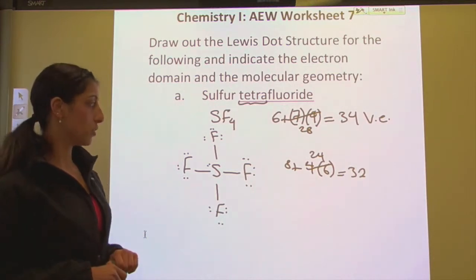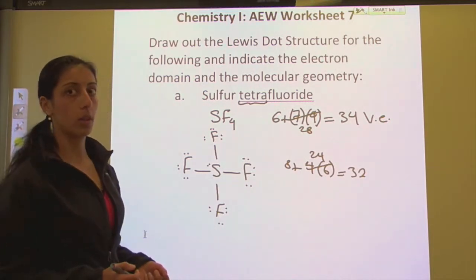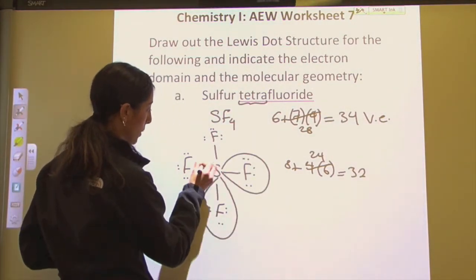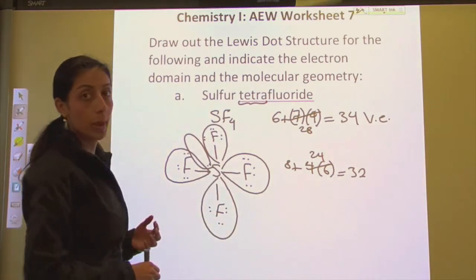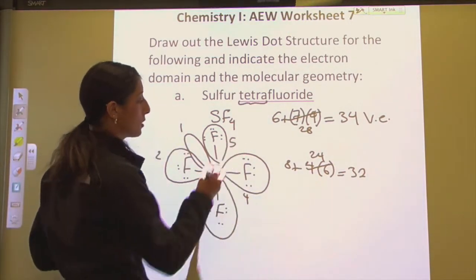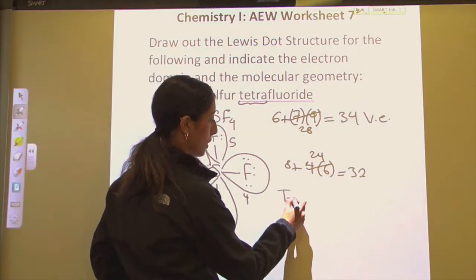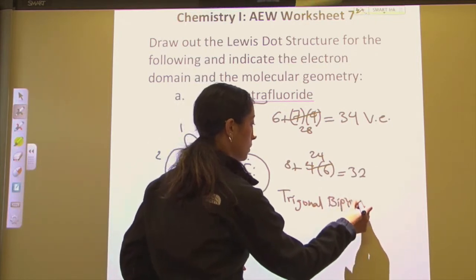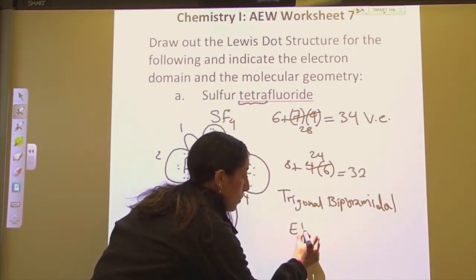Let's start with electron domain geometry. When determining electron domain geometry, we look at all of our electron clouds — our electron domains. Each one of these bonds is a domain, and remember, when it comes to electron domain geometry, we also include our lone pair. In this case, we have one, two, three, four, and five electron domains. So this gives us a trigonal bipyramidal electron domain geometry.